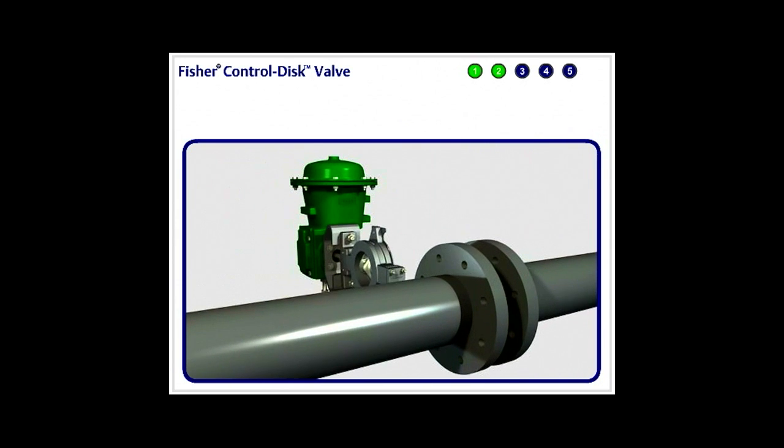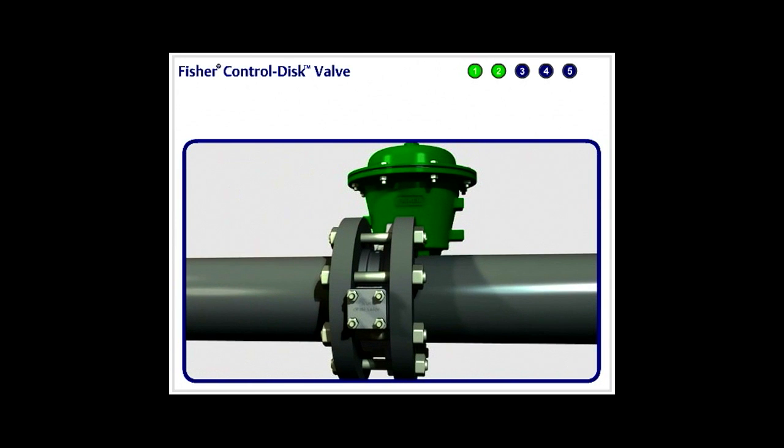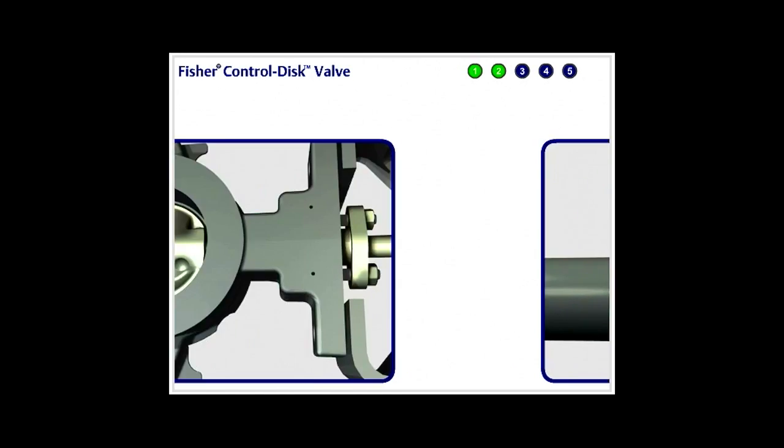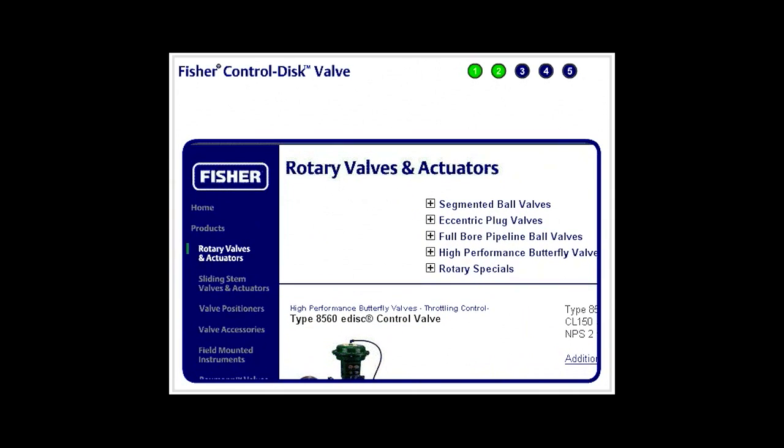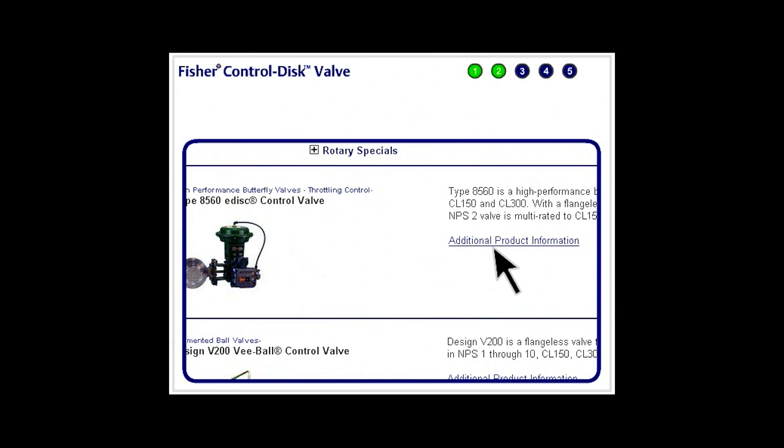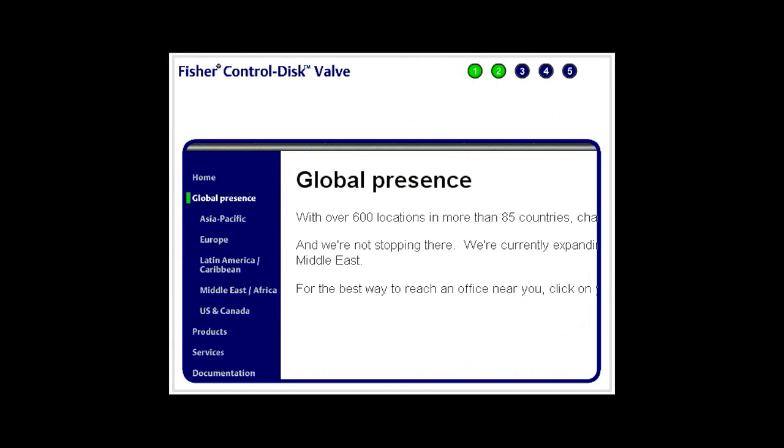As a direct replacement valve, you can use existing piping. Maintenance is quick and easy. Documentation is detailed and easily accessed. Local service and support is readily available.